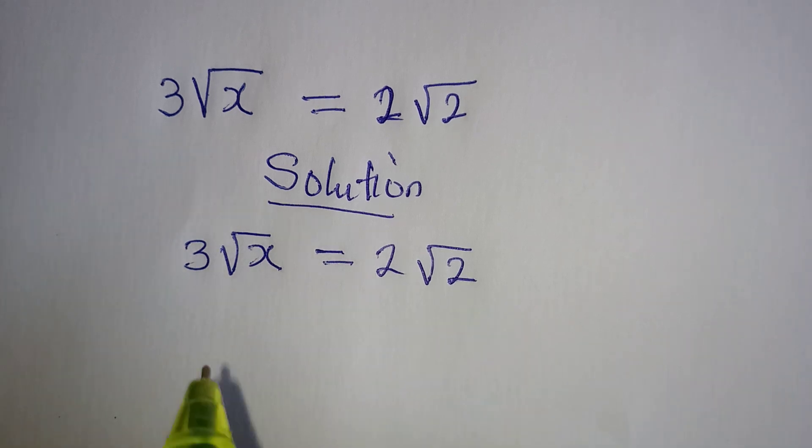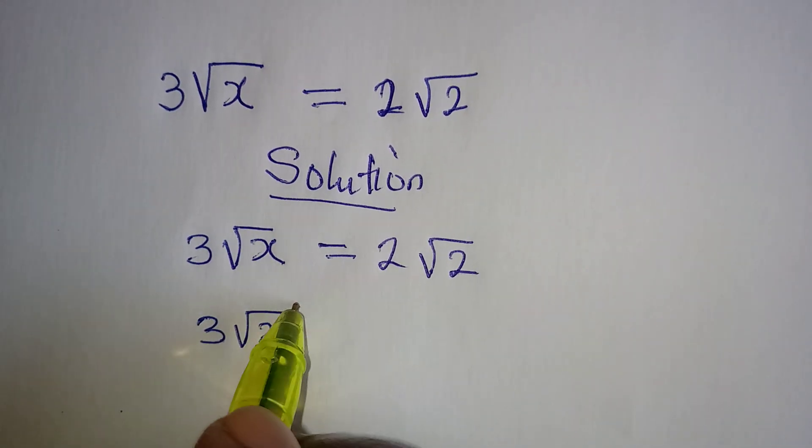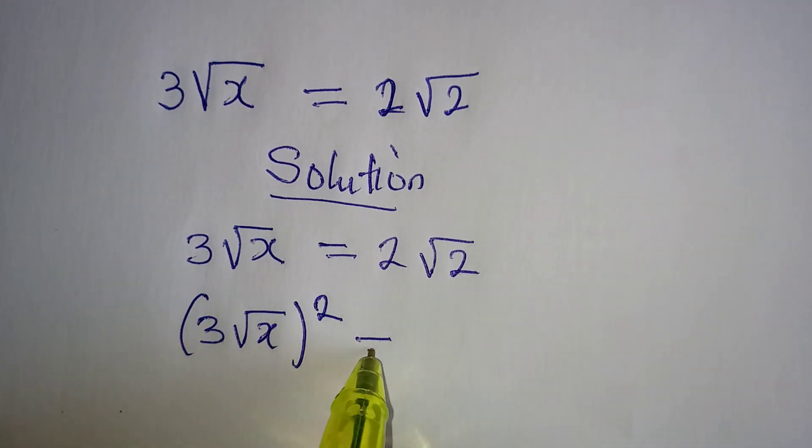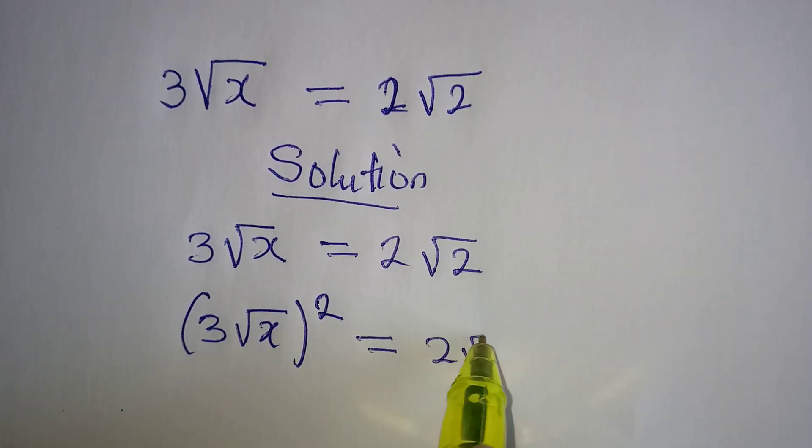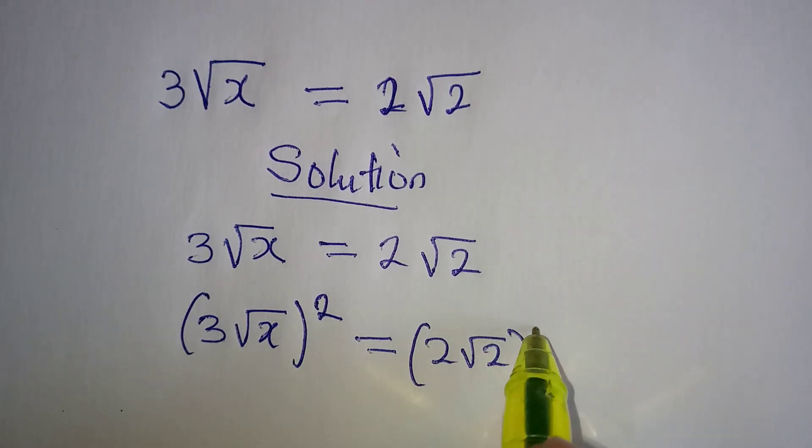So what is the first thing to be done? The first thing to be done is to square both sides. And this is equal to 2 root 2 both squared.